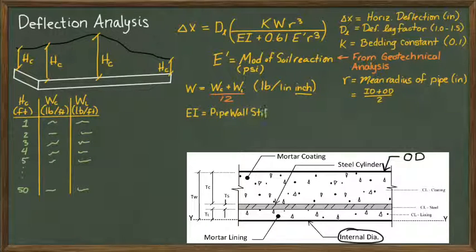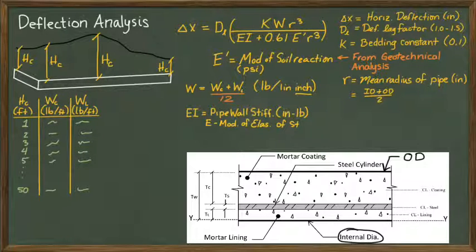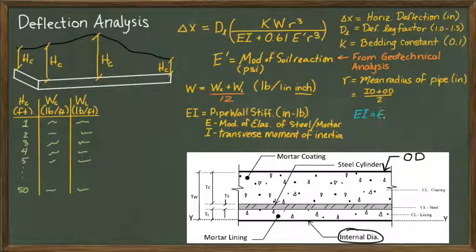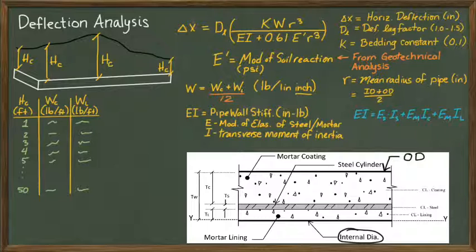The next term that needs some explaining is the product of the E and I terms, the modulus of elasticity of the steel or mortar, as well as the transverse moment of inertia. The EI term is the summation of the EI products for each of the individual materials used to construct the pipe wall.